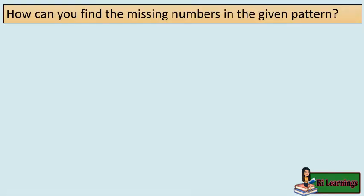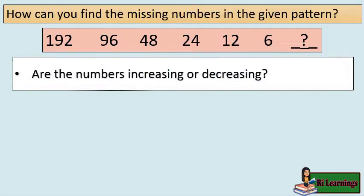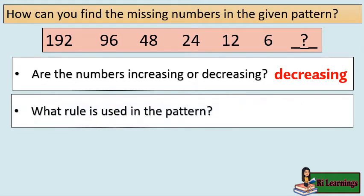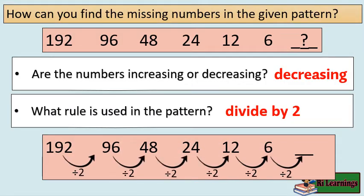How can you find the missing numbers in the given pattern? 192, 96, 48, 24, 12, 6, blank. Are the numbers increasing or decreasing? The answer is decreasing. What rule is used in the pattern? Divide by 2, or the terms have a common ratio of 2. Perform the operation: 6 divided by 2 equals 3. The missing term is 3.